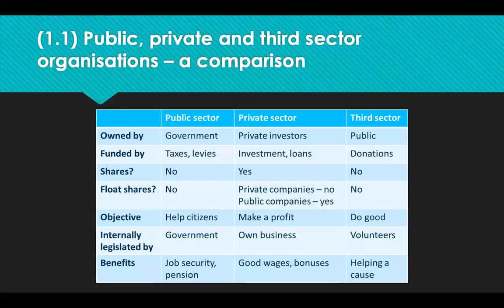Now let's look at the different types of organisations — this relates to how they're owned and how they're operated. We have the public sector, the private sector, and the third sector. Public sector organisations are service organisations; they provide education, emergency services, military and municipal services, and universal health care in some countries such as the United Kingdom, Singapore and China.